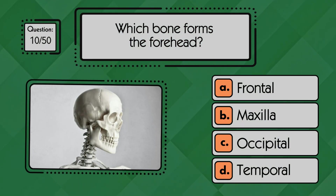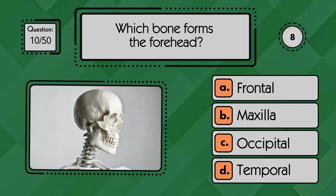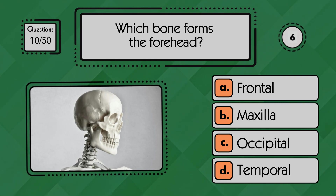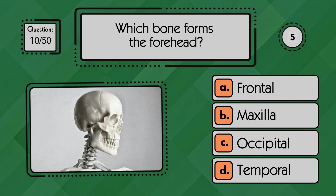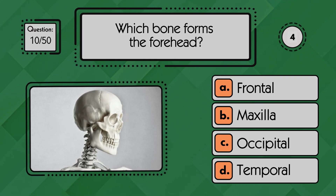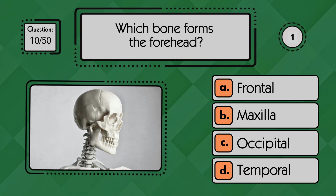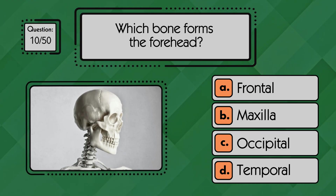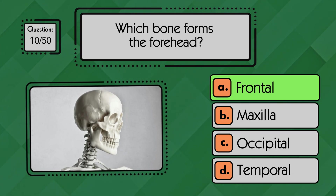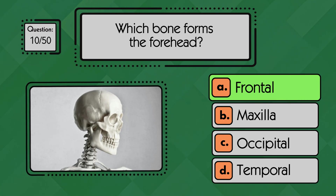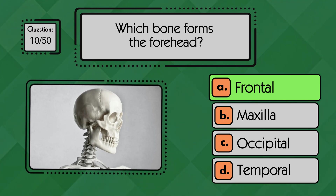Which bone forms the forehead? The forehead is formed by the frontal bone, which also helps shape the upper part of the eye sockets.